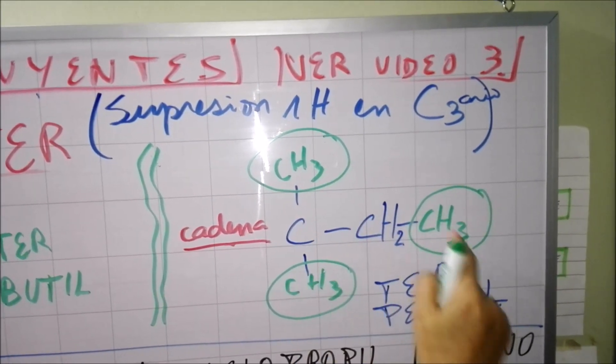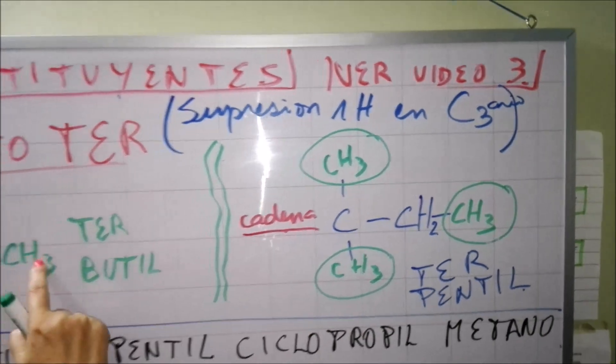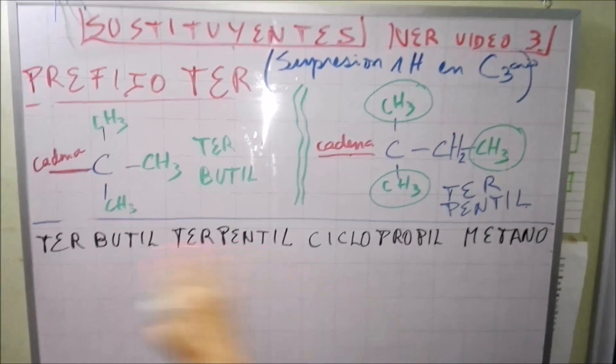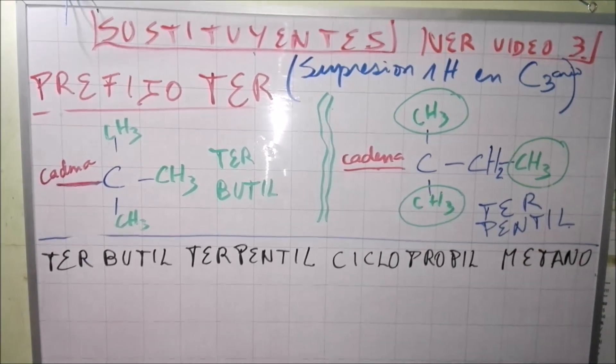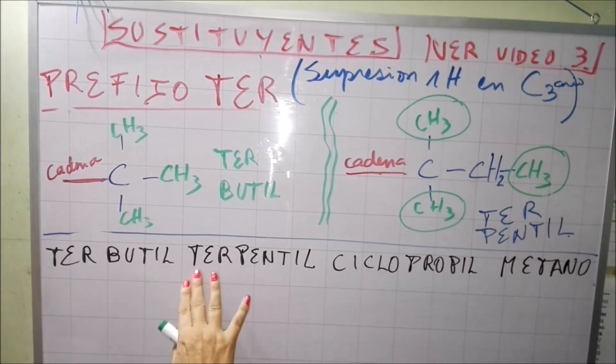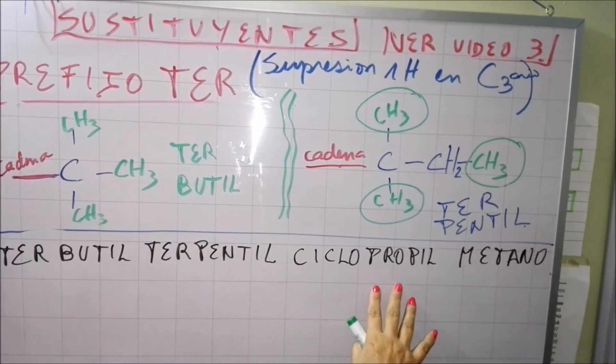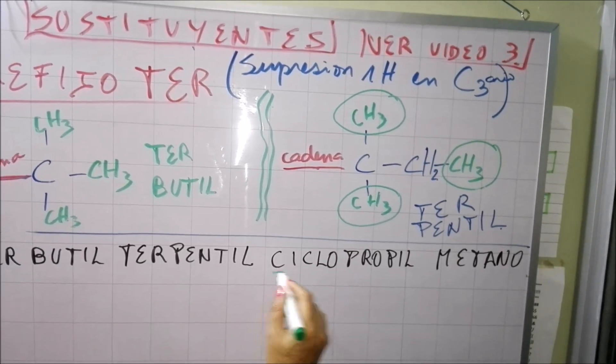Mira, al final siempre voy a tener CH3. Al final CH3. Para que te quede más claro voy a hacer un ejercicio: terbutil, terpentil, ciclopropil. Otra vez voy a poner un sustituyente ciclánico.